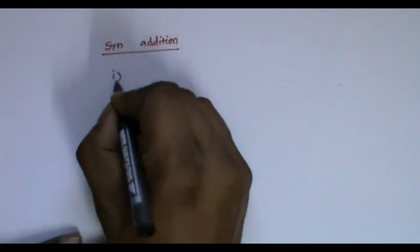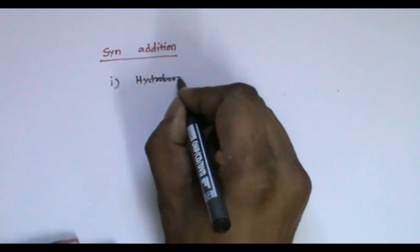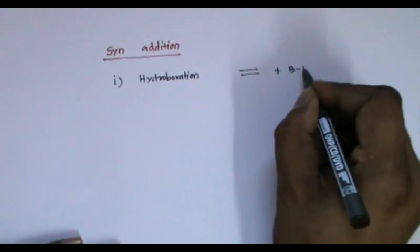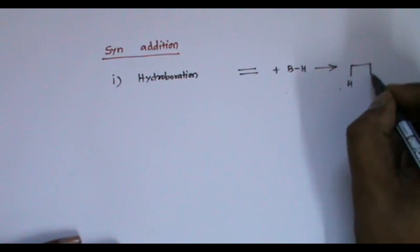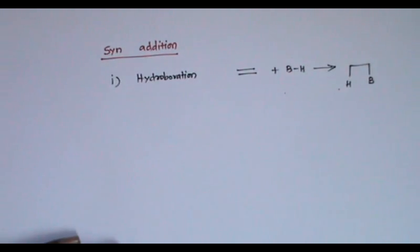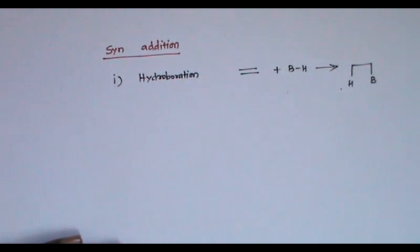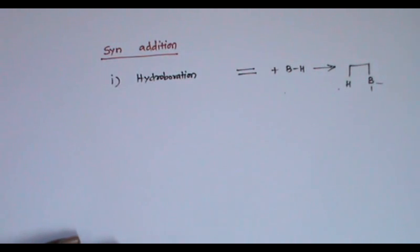The reactions involving syn addition: the first one is hydroboration. When you add a BH bond across an alkene, the product we get has hydrogen and boron added in the same direction. For simplicity I have omitted two more groups here, but there will be two more groups present.